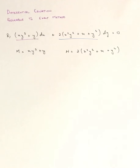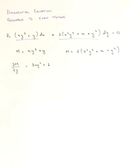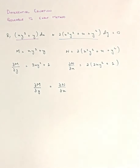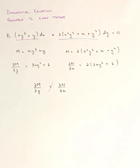Now we partially differentiate M and N with respect to y and x respectively. Partially differentiating M with respect to y gives 3xy² + 1. Partially differentiating N with respect to x gives 2(2xy² + 1). Since ∂M/∂y ≠ ∂N/∂x, the equation is not exact and cannot be solved by the exact method alone.